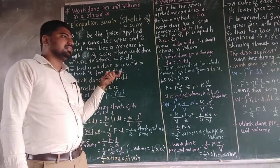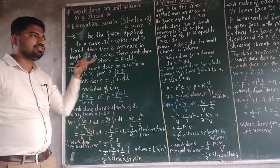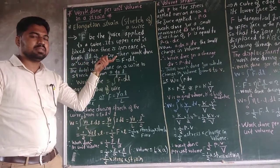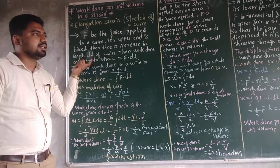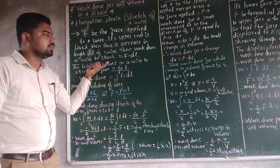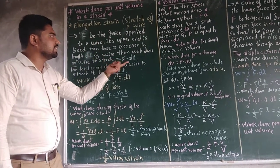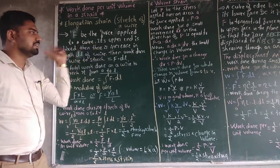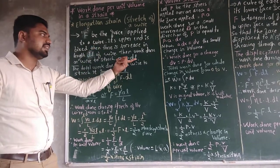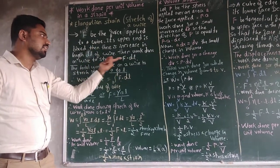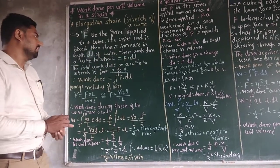Work done: you have to know that work done is equal to force into displacement. That is, work done equals F into DL — where F is the force and DL is the change in length.